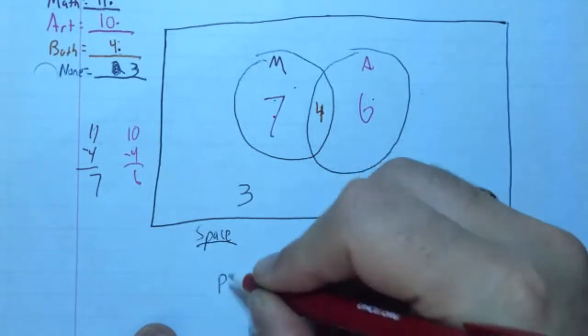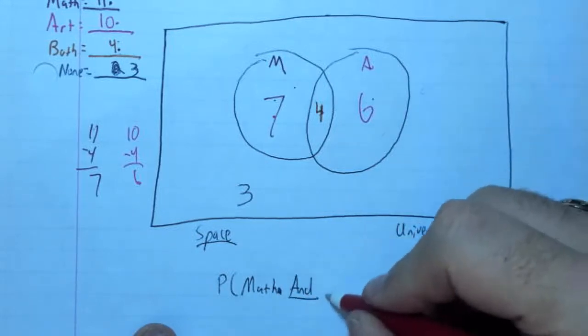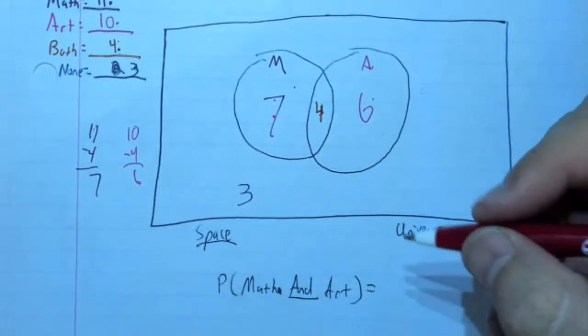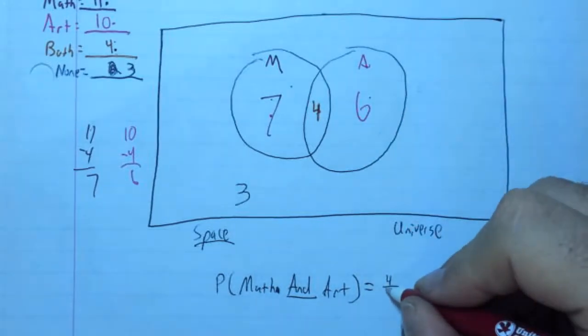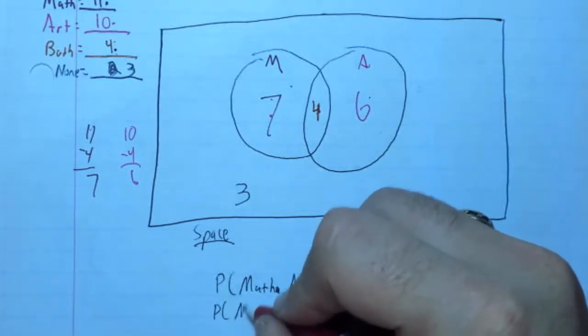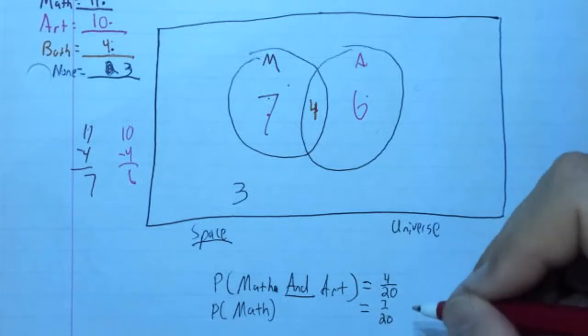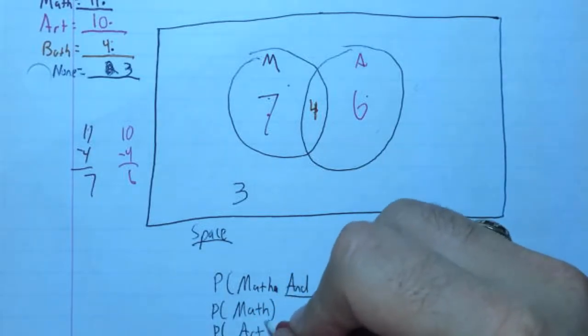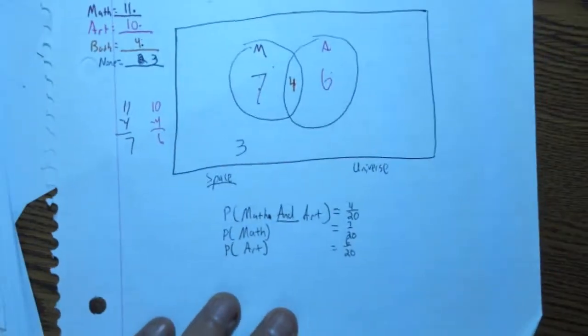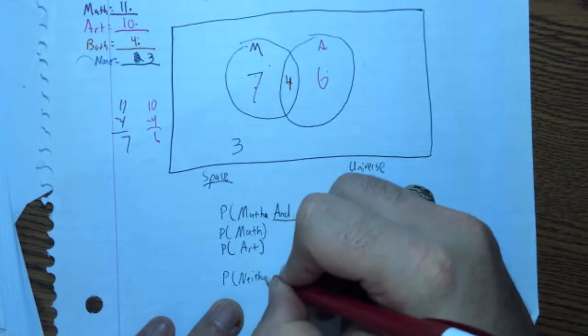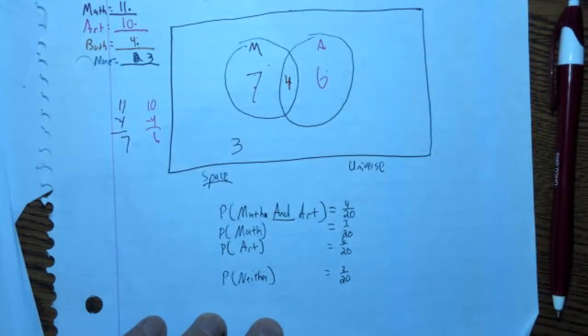So let's talk about the probability of a student taking math and art. Remember it's probability of the event, so how many people do I have taking math and art? Well that's the central region here which is four out of twenty. Now let's do the probability of math only. Well that's my seven out of twenty. How about my probability of art only? Well that one gives me my six out of twenty. And then my probability of neither or none, and that's my three out of twenty.